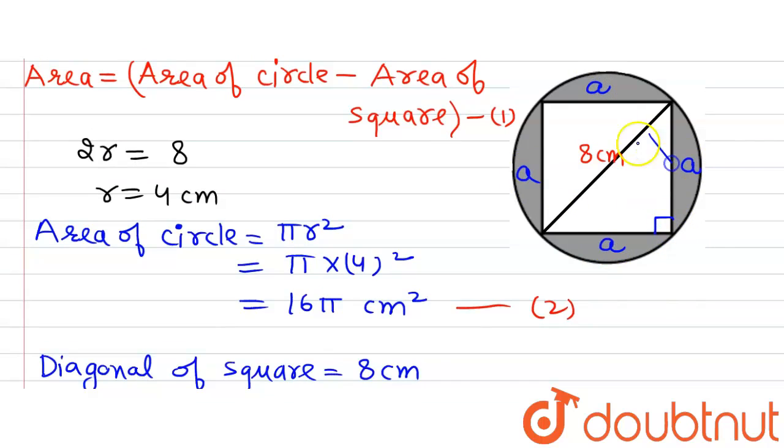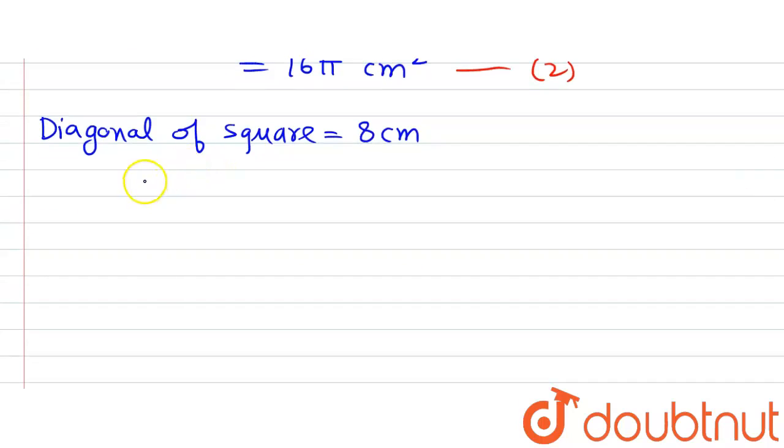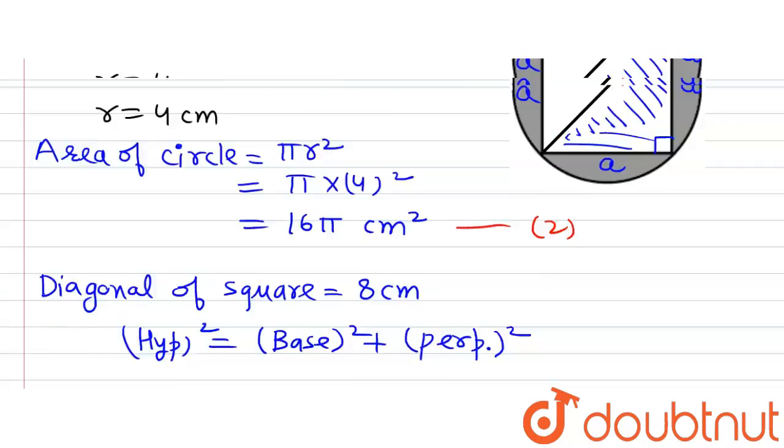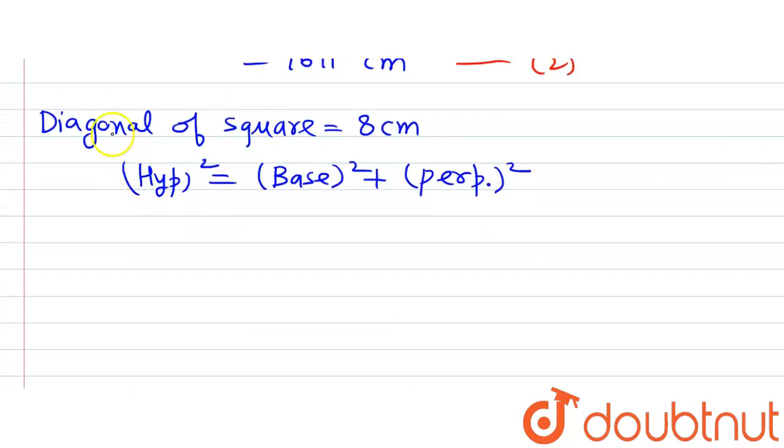And this is a right-angled triangle. So we can find the length of a by using Pythagoras theorem. Pythagoras theorem says that hypotenuse² equals base² plus perpendicular². So we have 8² equals a² plus a², which gives 2a² equals 64, so a² equals 32 cm².